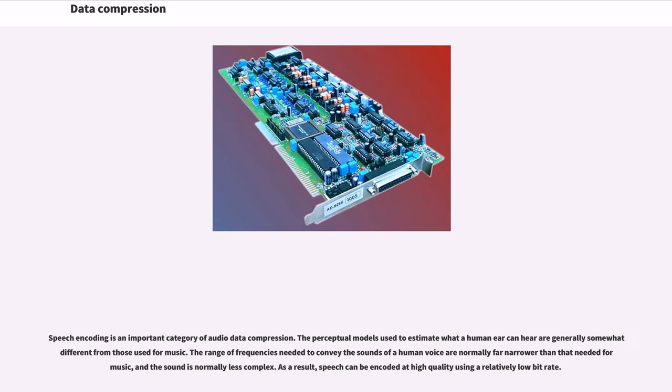Speech encoding is an important category of audio data compression. The perceptual models used to estimate what a human ear can hear are generally somewhat different from those used for music. The range of frequencies needed to convey the sounds of a human voice are normally far narrower than that needed for music, and the sound is normally less complex. As a result, speech can be encoded at high quality using a relatively low bit rate.